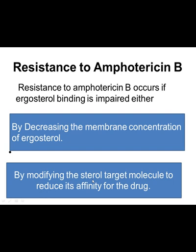The resistance to amphotericin B occurs in two ways: either by decreasing the membrane concentration of ergosterol, or by modification of the sterol target molecule, which reduces the affinity of amphotericin B for binding to ergosterol. So the two main points of resistance are decreased concentration of ergosterol and decreased affinity of amphotericin B towards ergosterol due to modification.